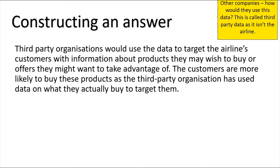Third-party organizations would use the data to target the airline's customers with information about products they may wish to buy or offers they might want. Customers are more likely to buy these products because the third parties use data on what they actually purchase. For example, if a customer regularly buys confectionery on the plane, third parties might target them with special offers on similar products.